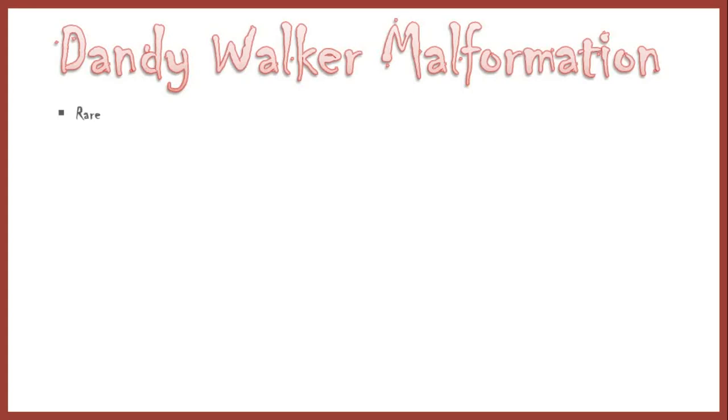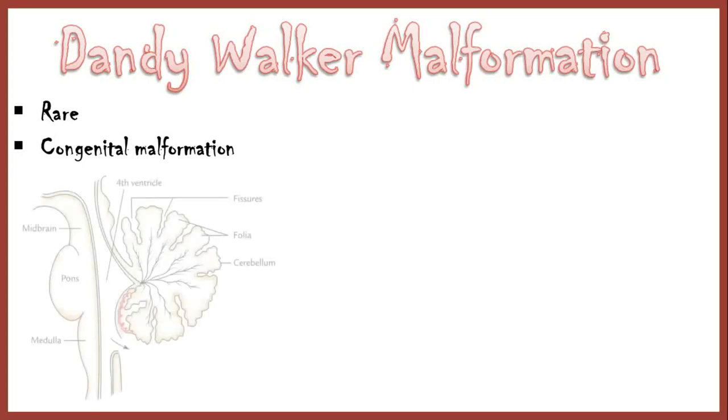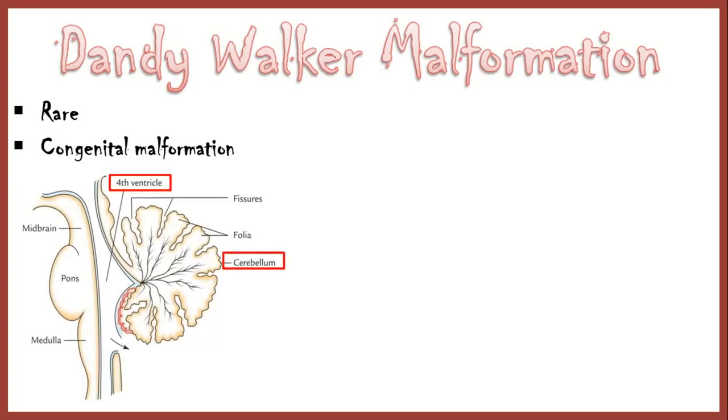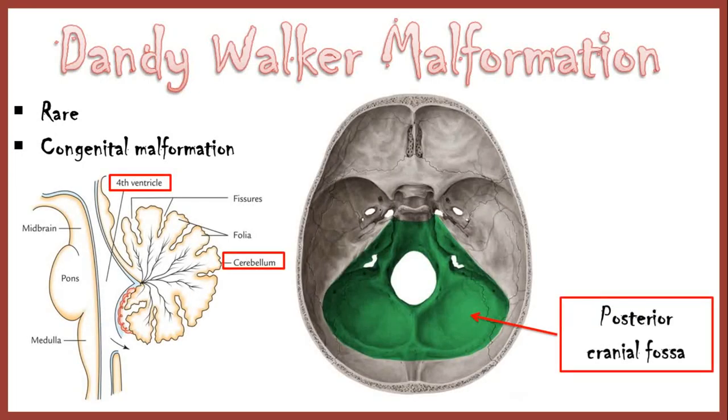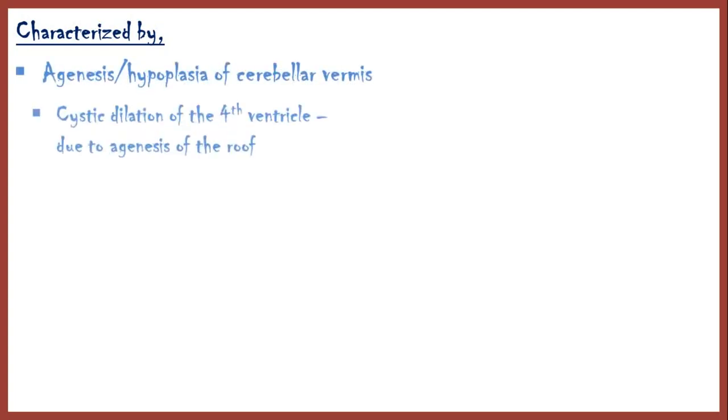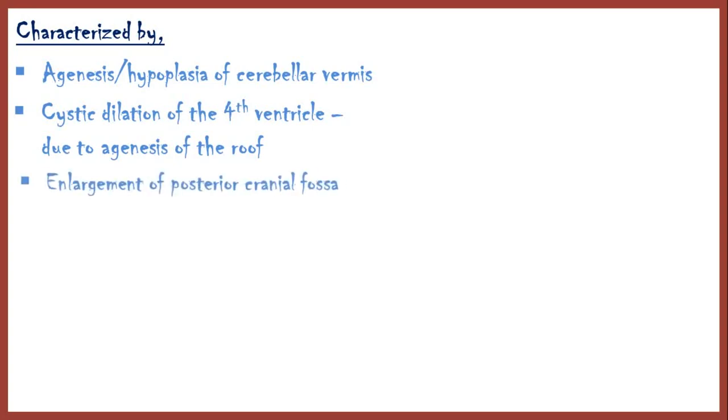Dandy-Walker malformation is a rare congenital malformation which involves the cerebellum, fourth ventricle, and the posterior cranial fossa. It is characterized by three main features: agenesis or hypoplasia of the cerebellar vermis, cystic dilation of the fourth ventricle due to agenesis of its roof, and enlargement of the posterior cranial fossa.